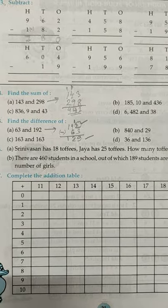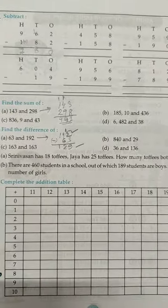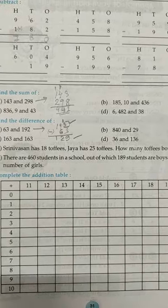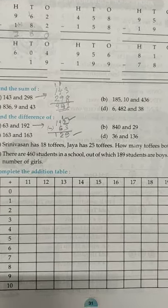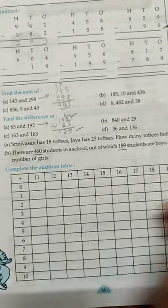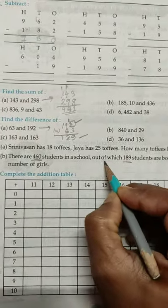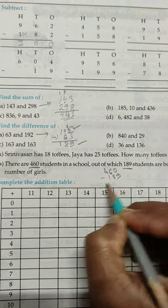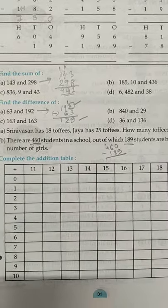Number B. There are 460 students in a school out of which 189 students are boys. Find number of girls. So there are this much students in a school. Means total students in which 189 students are boys. So how many girls are there? So you need to subtract. Total students is 460. So 189 is the students that are boys. So you need to minus from 460, 460 minus 189. Then what will be the answer? You will find out the answer. That will be the number of girls. So you will try these two pages first.